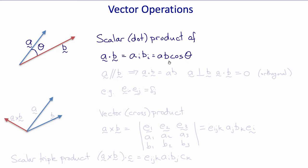Therefore, as a is parallel to b, the dot product of a and b is the product of their magnitudes. And if a is perpendicular to b, then the dot product is zero and the vectors are orthogonal.